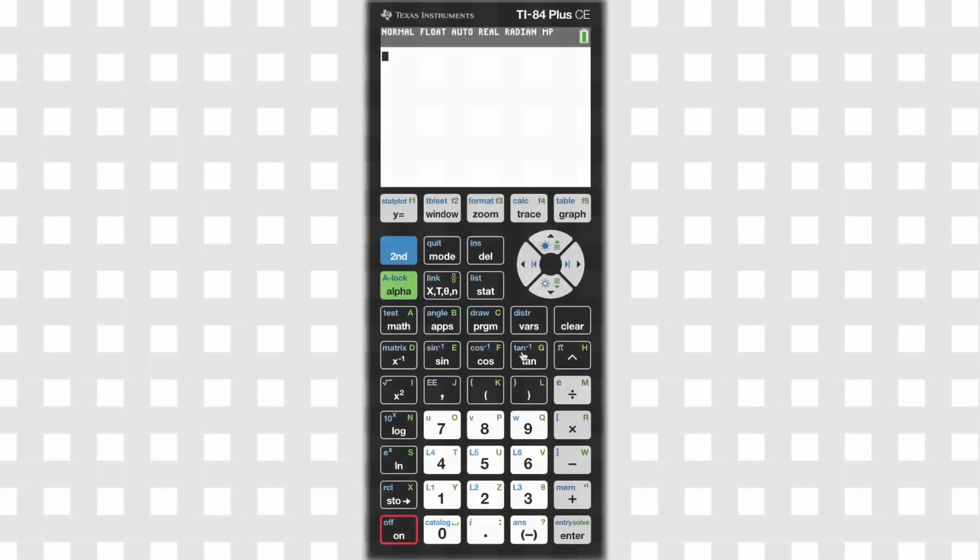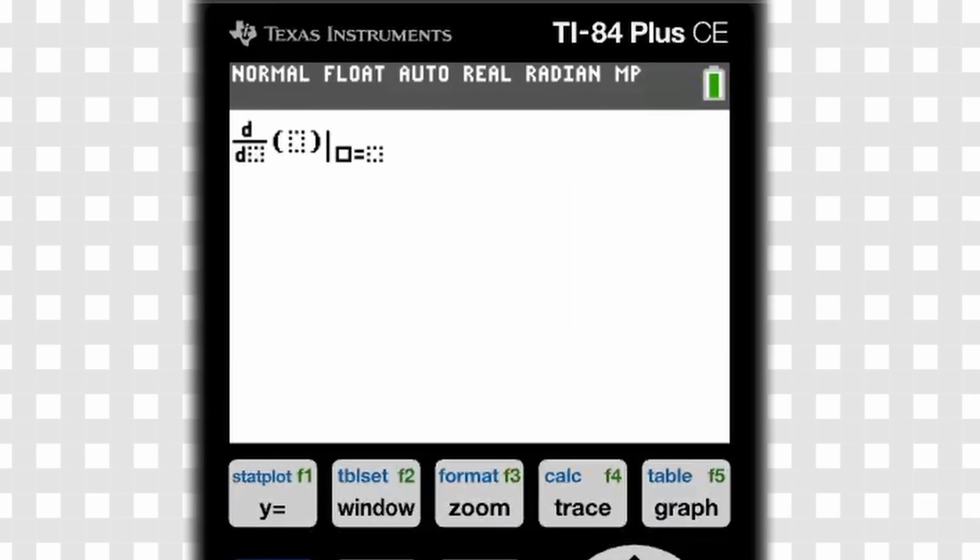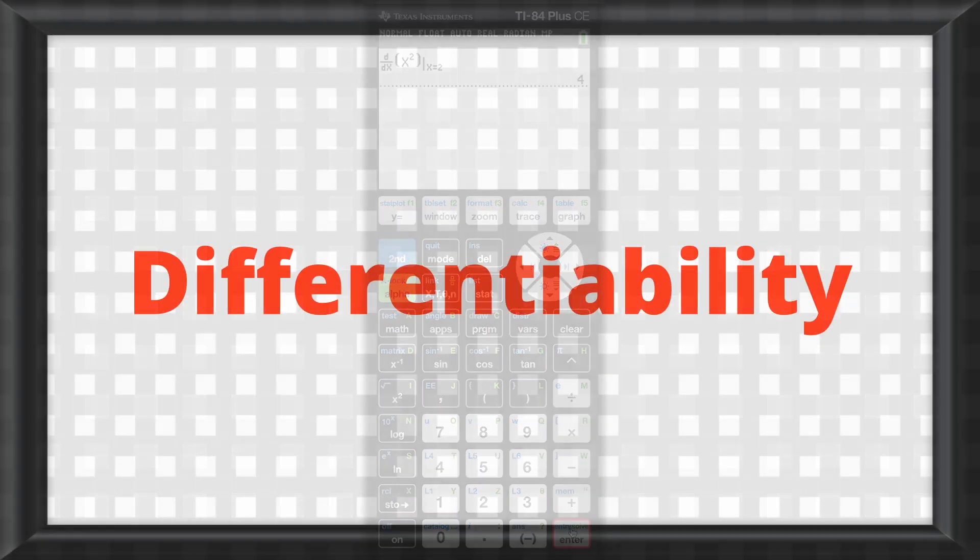Now, let's bust out the dusty old calculator real quick. Here you can just skip the entire derivative solving process and press the math button, then scroll down to the 8th option. You plug in with respect to x, then the function you're trying to find the derivative of, then the point you're finding the derivative at, and it solves it for you. Isn't that fun? All right, moving on.